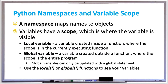Hi everyone. In this video we're going to learn about Python namespaces and the scope of your variables. A namespace is used by the Python interpreter to track all objects in your program. It maps variable names to their corresponding object. There are both local and global variable namespaces. Global variables are tracked in the global namespace and local variables are tracked in the local namespace.